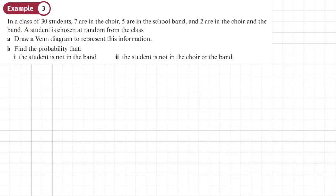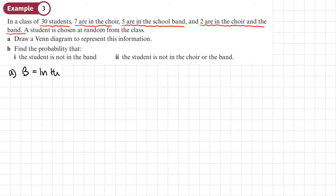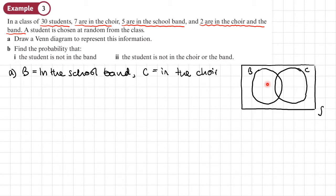Example 3: in a class of 30 students, there are 7 in the choir, 5 are in the school band, and 2 are in the choir and the band. A student is chosen at random. Part A is to draw a Venn diagram. So let's define our events: B is going to be in the school band, and C is going to be in the choir. Here's my Venn diagram with S for the sample space. Remember we fill in the overlap first — the overlap represents those in the choir and the band, so we put the number 2 there.